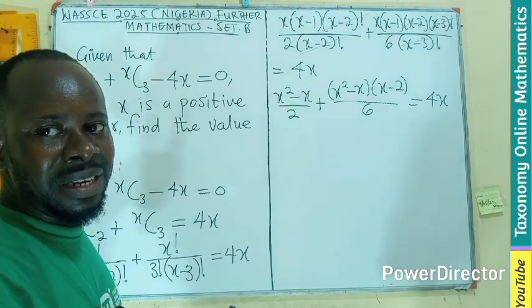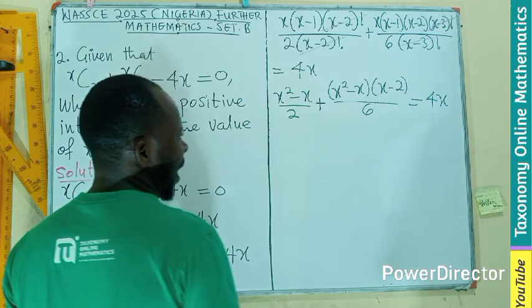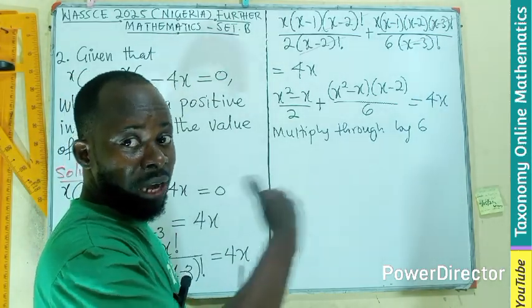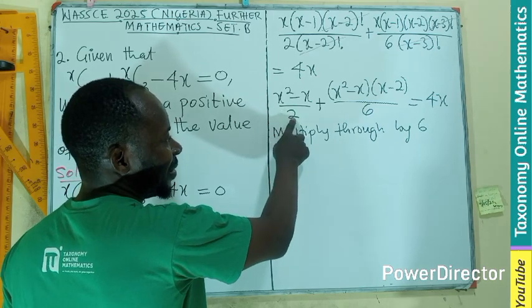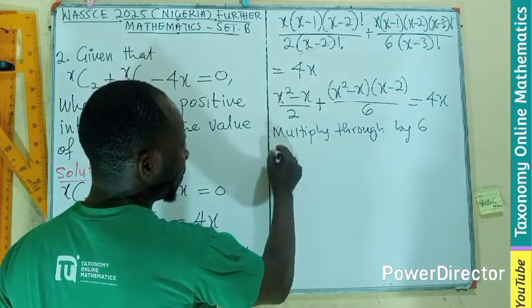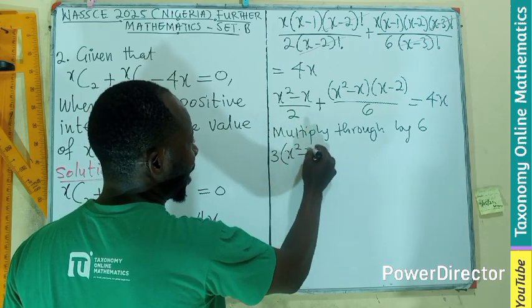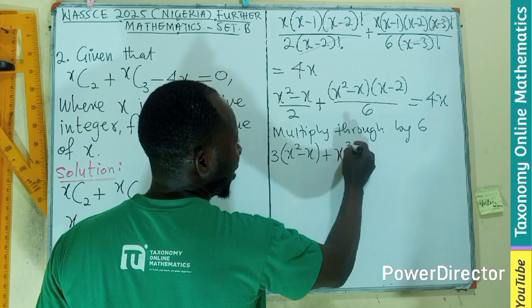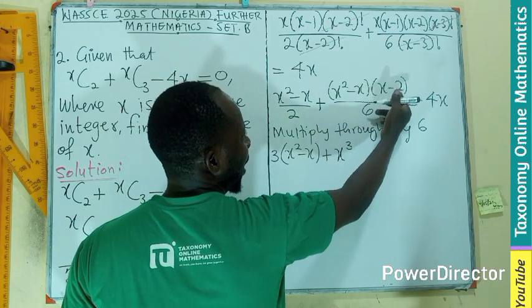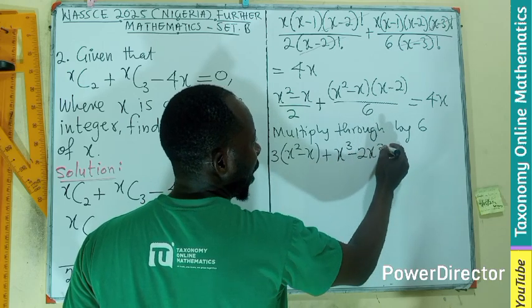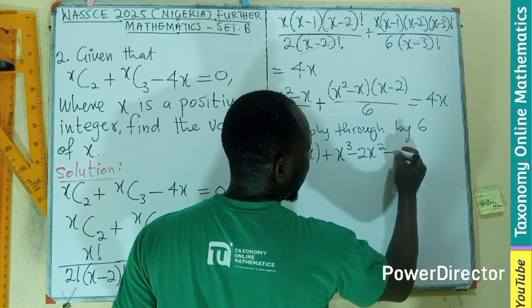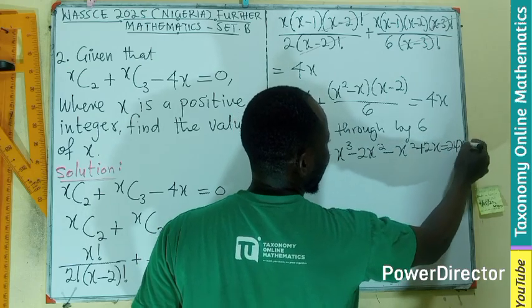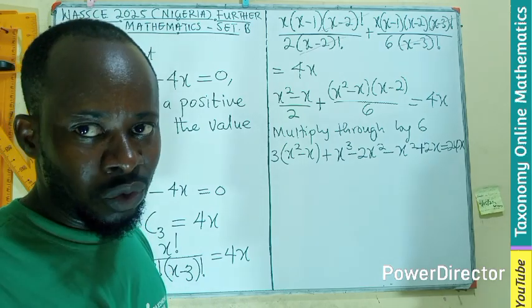Let's multiply by the LCM first. Let's multiply by 6. So, when I multiply here by 6, 2 will divide the 6 three times. So, I will only be having the 3 into bracket, the x squared minus x plus 6 will cancel here. Let's multiply at once. x squared times x, that will be x to the power 3. x squared times minus 2, that will be minus 2x squared. Minus x times x, minus x squared. Minus x times negative 2, we will give it plus 2x equals to 24x, since we are multiplying through by 6.